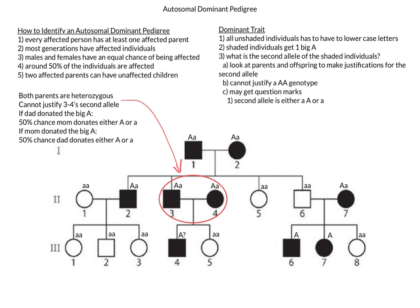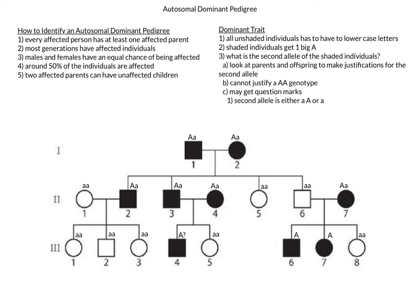Lastly, we have individuals 3-6 and 3-7. These are both going to be heterozygous due to the same justification. If we look at the parents, we know that they received their dominant allele from mom. However, dad can give only recessive alleles. As such, both would have to have at least one recessive allele, and they are then both heterozygous.